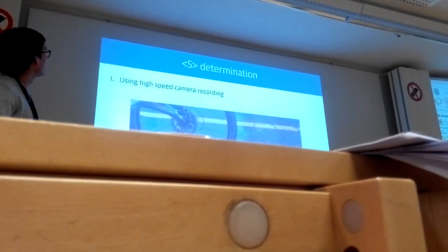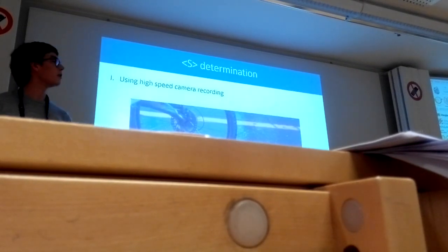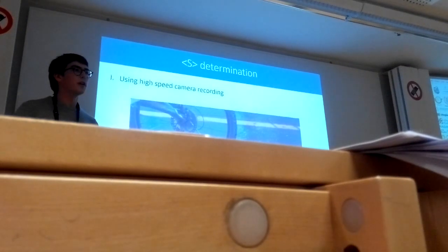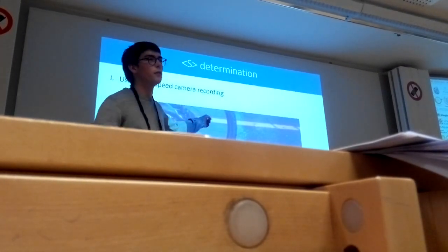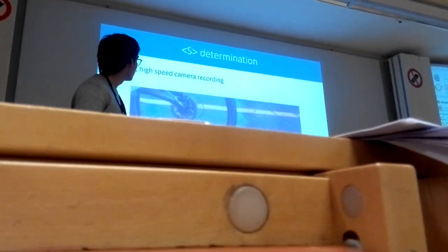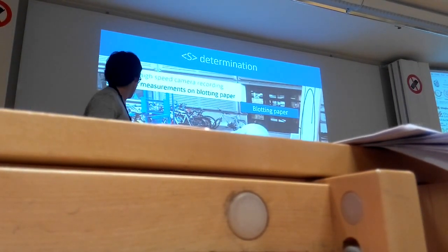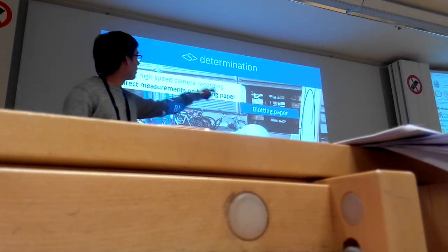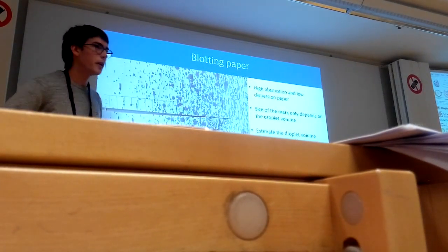Now, I'm going to determine the mean droplet size that are created from the bike. There are two ways to determine it. First, using the high-speed camera recording. This is a picture from the video. You can see how the droplets are created. The second setup is by putting colored water into the rails with the fixed bike. Using blotting paper, we can determine visually what are the sizes of the droplets that are created.